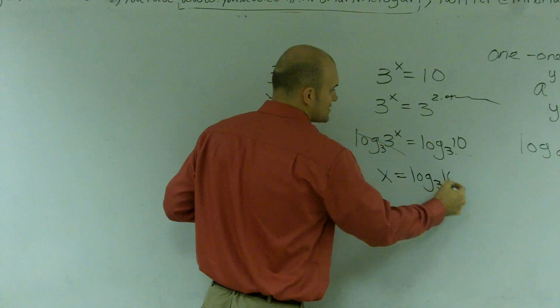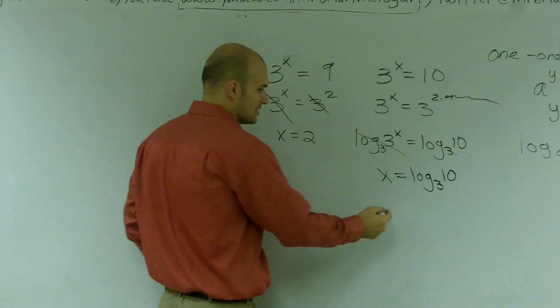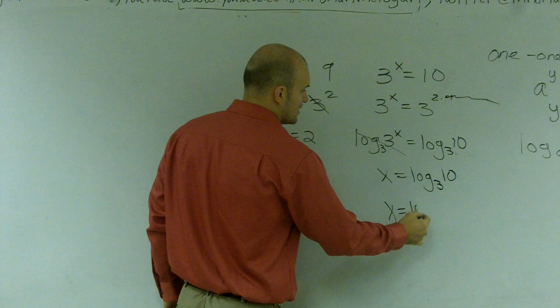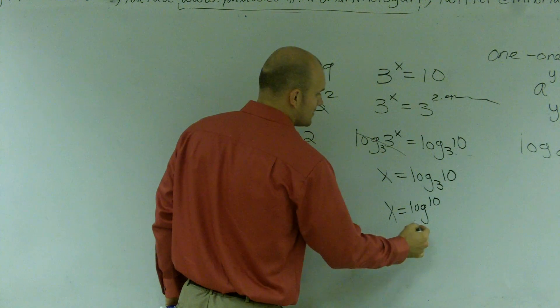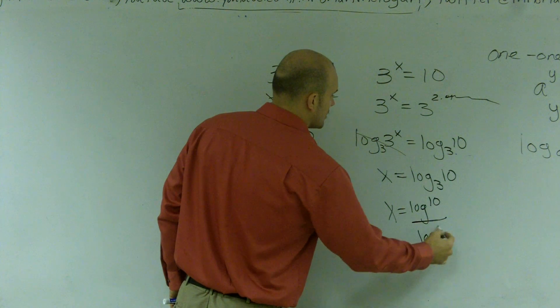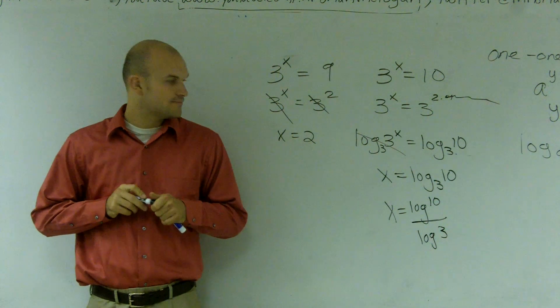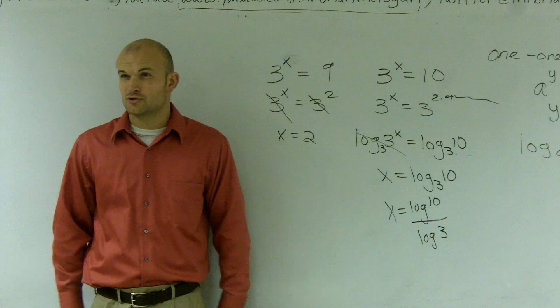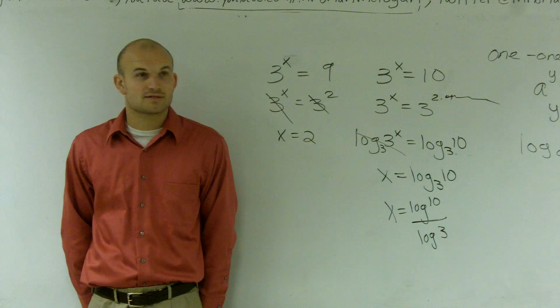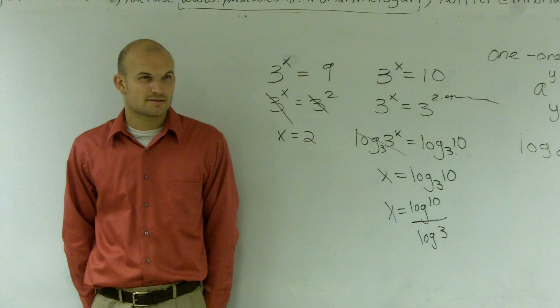So now, log base 3 of 10, if I type in my calculator and use change of base, equals log base 10 over log base 3. So that should give me like 2.01 or 1, something like that. Does that make sense? Kind of?